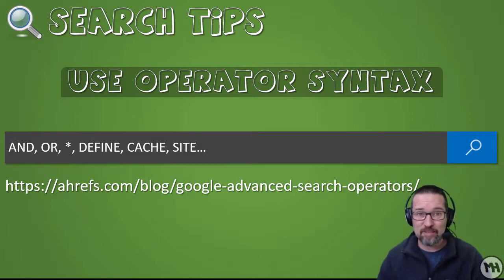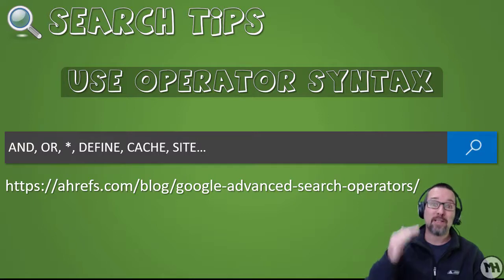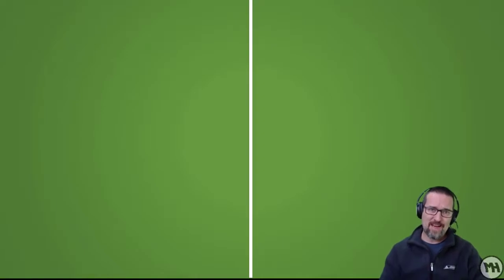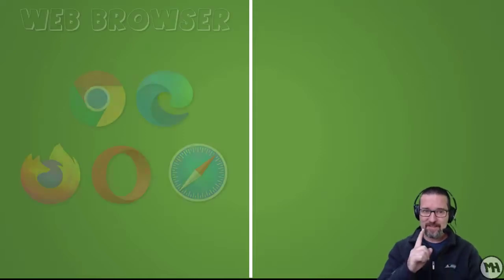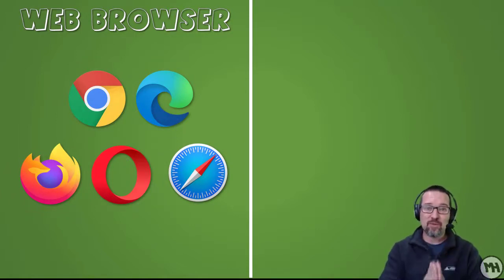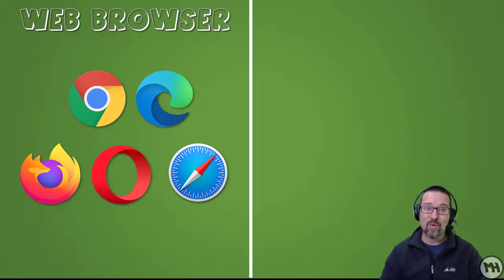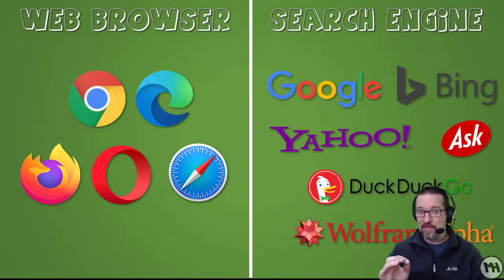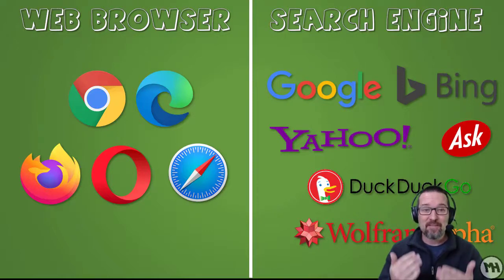There's a URL with a whole list of operators and syntax to check out. The key takeaway: know the difference between a web browser and a search engine. A web browser is an application we use to load and read web pages and web content. A search engine is also an application, but it runs in the browser and allows us to search the internet and find information.